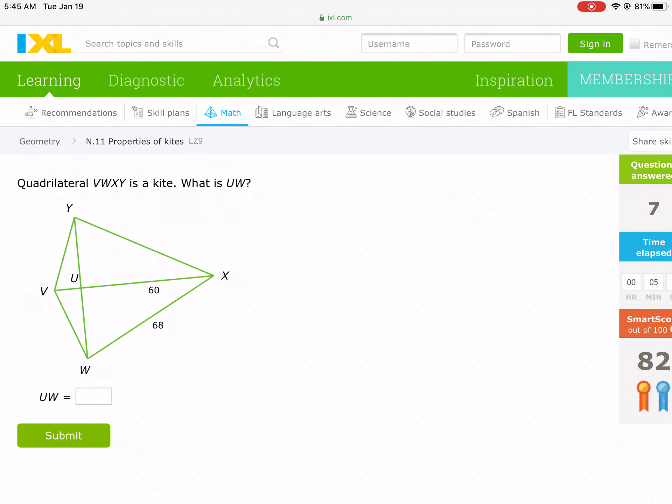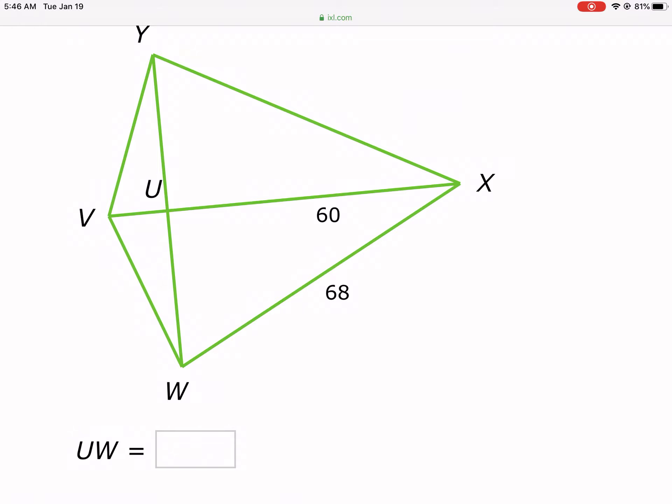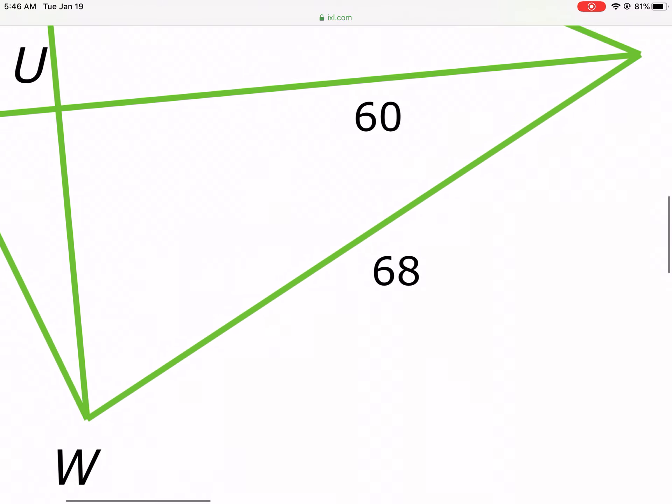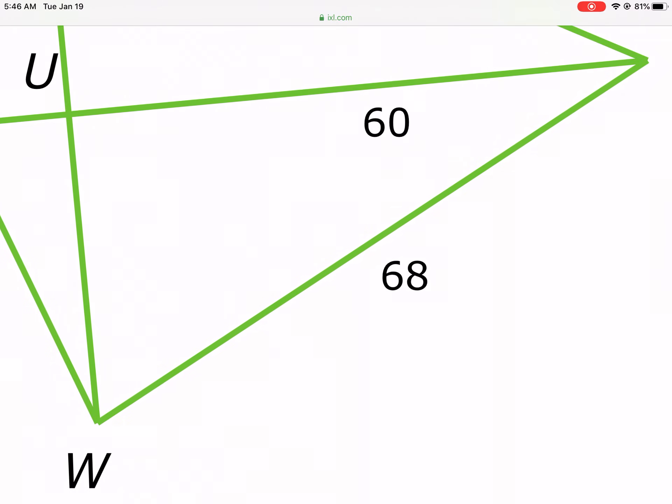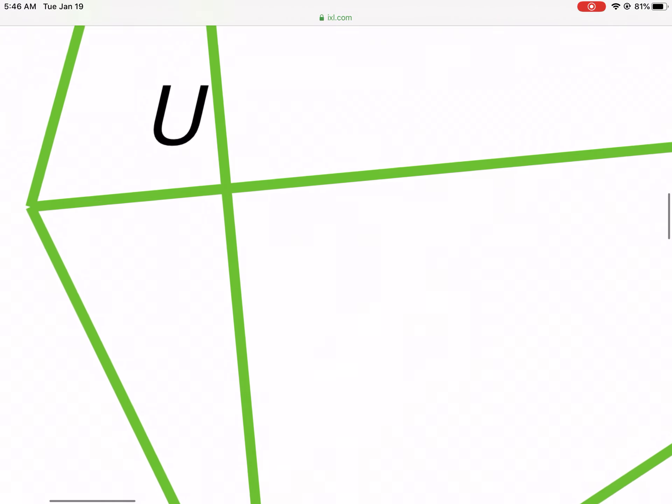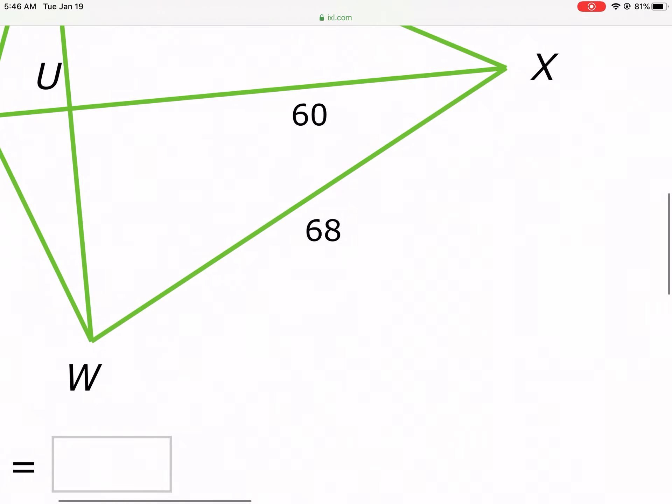Okay, ooh, cool, a new problem. Quadrilateral VWXY is a kite. What is UW? All right, here it's trying to trick you, but it's just asking for this leg here. We actually have to use the Pythagorean theorem. It creates a 90 degree, a right triangle here, between 60, our missing value UW, and then our hypotenuse is 68. The hypotenuse is opposite this 90 degree angle. So this is a 90 degree angle, that's one of the properties of a kite, the diagonals are perpendicular to each other.